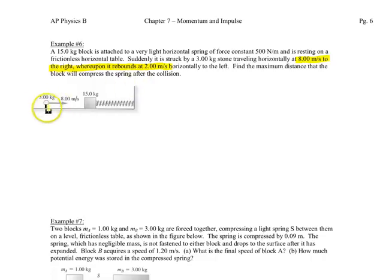So what happens is the stone hits this block and then it rebounds backwards. You're looking for the maximum distance that the block will compress this spring with a spring constant of 500 newtons per meter. My hint is that you need to break this problem into two parts: the collision between the stone and the block, and then afterwards where the kinetic energy of this block is transferred into the elastic potential energy stored in the spring.